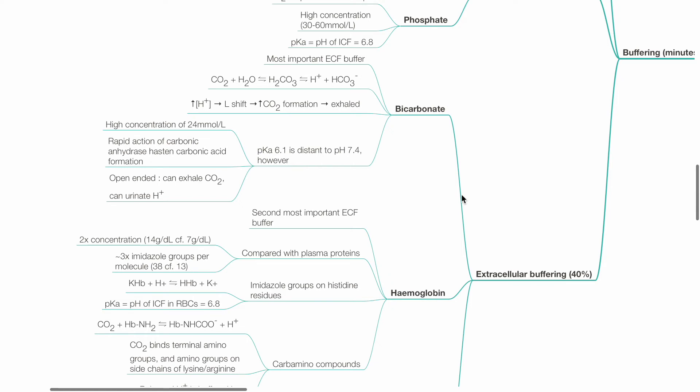CO2 plus H2O reversibly forms H2CO3 which reversibly dissociates to H+ and bicarbonate ion. Increased H+ produces a left shift in this equilibrium which increases CO2 formation which is exhaled. pKa is 6.1, which is distant to plasma pH of 7.4. However, it has a high concentration of 24 millimole per liter. Rapid action of carbonic anhydrase hastens carbonic acid formation and it's open-ended as CO2 can be exhaled and hydrogen ions can be urinated.